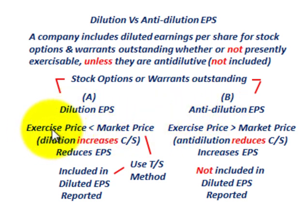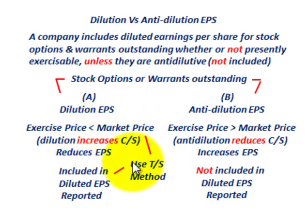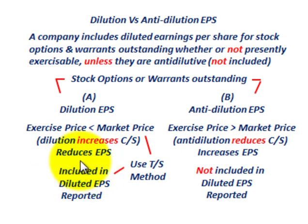For diluted earnings per share, this is the case where the exercise price on those options is less than the market price of the common stock. It's assumed these options will be exercised, meaning more common stock will be issued, which reduces earnings per share. When the exercise price is less than the market price, we use the treasury stock method to determine what these options are equivalent to in common stock, and they would be included in reporting diluted EPS in your financial statements.